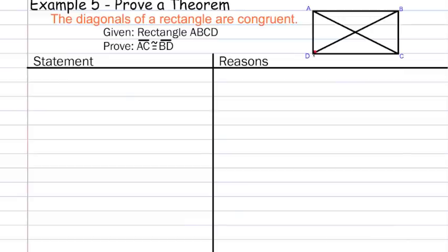To do that, we're going to do a triangle proof and prove that triangle ADC is congruent to triangle BCD using side-angle-side. We can prove AD is congruent to BC, DC is congruent to itself, and that angles ADC and BCD are congruent because of the right angle. Here's how we're going to put together that proof — I just outlined it verbally, and now we're going to write it out.